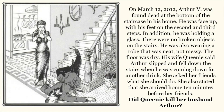On March 12, 2012, Arthur V. was found dead at the bottom of the staircase in his home. He was face up with his feet on the second and third steps. In addition, he was holding a glass. There were no broken objects on the stairs. He was also wearing a robe that was neat, not messy. The floor was dry. His wife Queenie said Arthur slipped and fell down the stairs when he was coming down for another drink. She asked her friends what she should do, and she also stated that she arrived home 10 minutes before her friends. Our question that we are going to be answering today is: did Queenie kill her husband, Arthur?